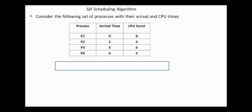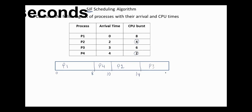Consider the following set of processes with their arrival and CPU times. According to shortest job first scheduling, in the queue initially we have process 1. After completing process 1, in the queue we have processes 2, 3, and 4. Process 4 has the minimum CPU burst, and after completing it, process 2 is scheduled — it needs 4 nanoseconds. The last process in the queue is process 3 with 6 nanoseconds.